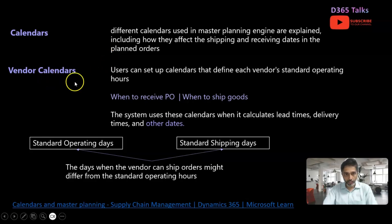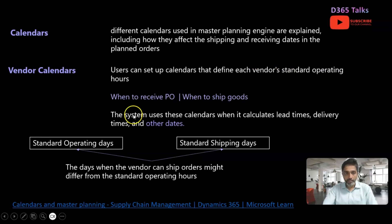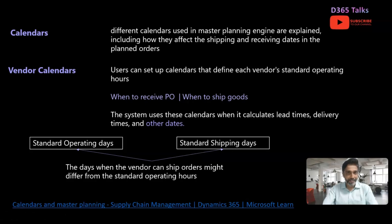The first one is the vendor calendar. Users can set up calendars that define each vendor's standard operating hours. These vendor calendars can be of two types: they can define the standard operating days for the vendor, or they can define the standard shipping days for the vendor. Vendors can operate Monday to Friday but still ship material on Saturdays and Sundays, so you need to configure both a vendor operating calendar and a vendor shipping calendar.